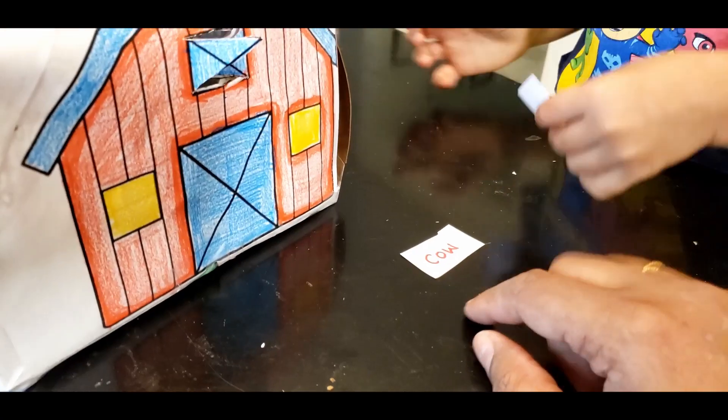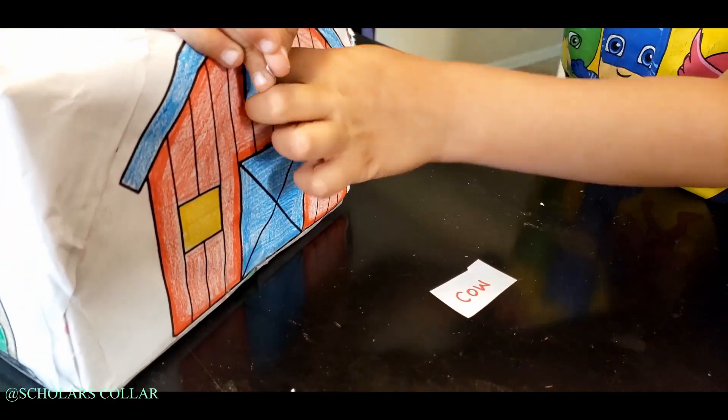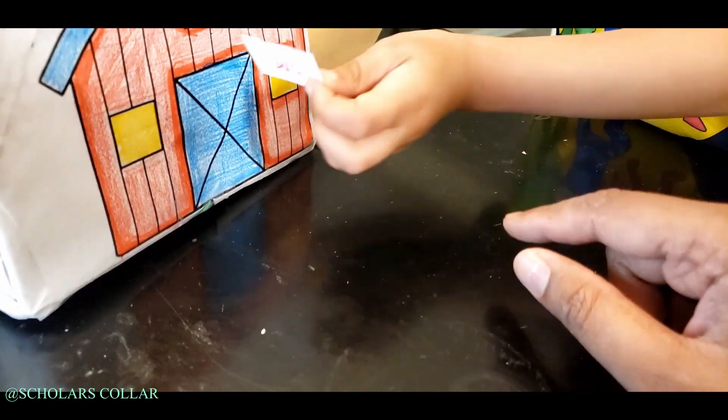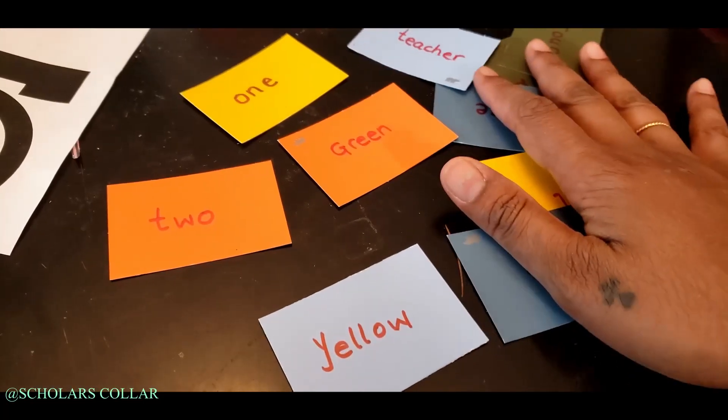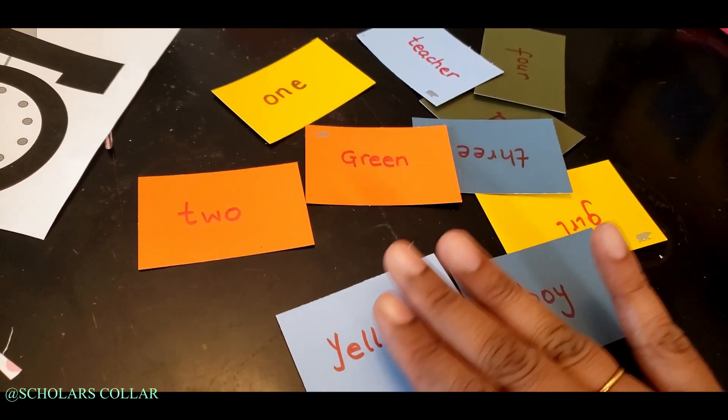Here we're doing the barn. I've introduced only a few sight words: cow, hen, and duck. I get him to read them because he can read 'cow' and 'hen' but didn't know 'duck,' so he reads those words and introduces them into the barn.